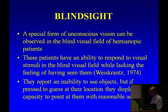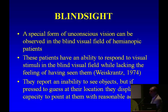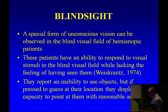Blindsight can be described as a special form of unconscious vision that can be observed in the blind field of hemianopic patients. These patients have an ability to respond to visual stimuli in the blind visual field while lacking the feeling of having seen them. They report an inability to see objects, but if pressed to guess at their location, they display a capacity to point at them with reasonable accuracy.